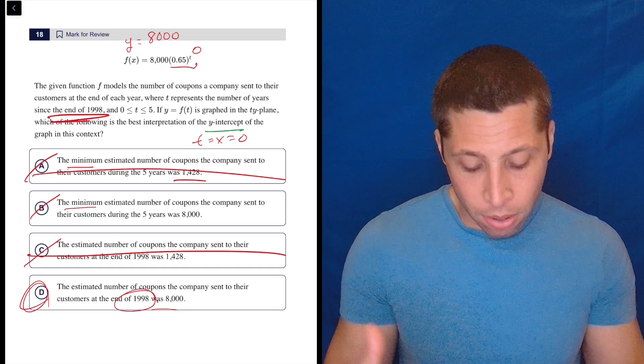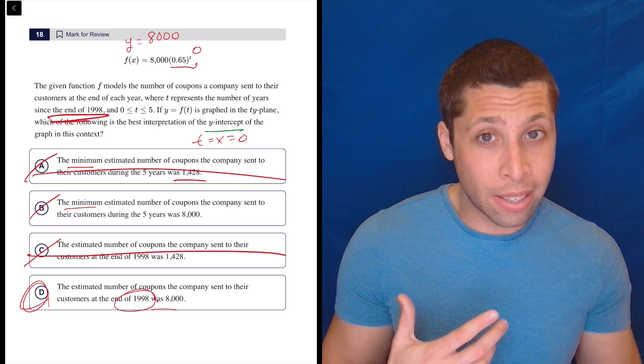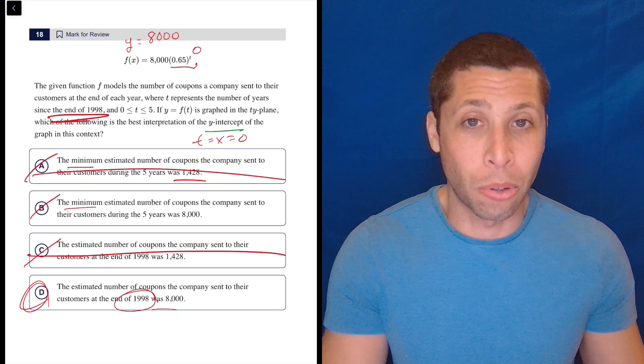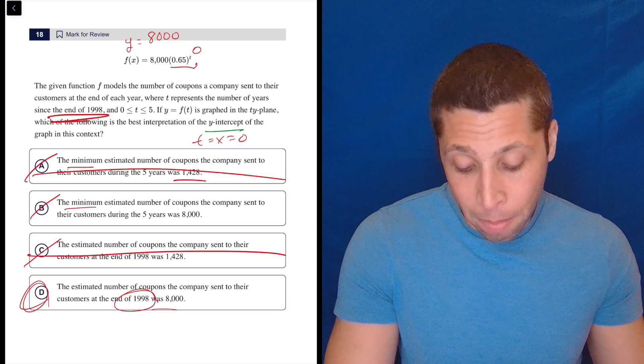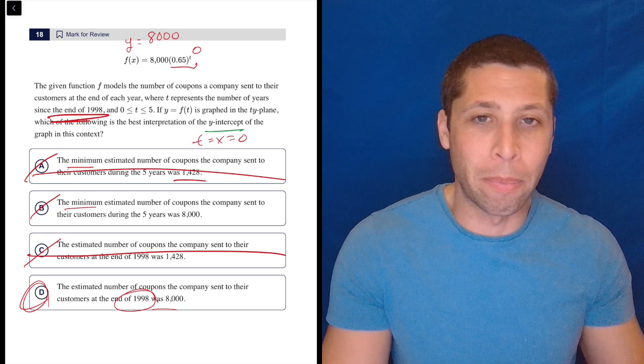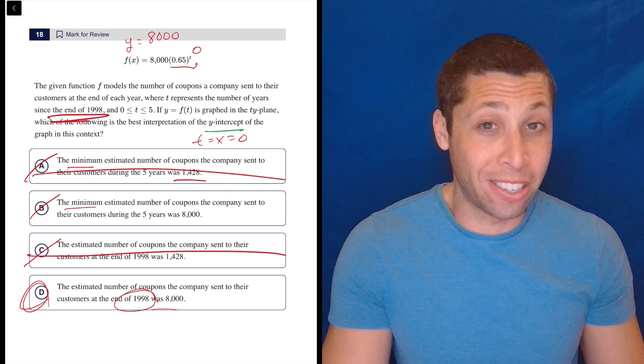And I would hope that if you're thinking, is it a minimum or is it a starting point, I'd hope you'd recognize that y-intercepts are starting points. It may even be the case that if I graph this thing, I know it is the case because 0.65 is going to mean it goes down. So 8,000 is not the minimum.